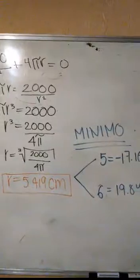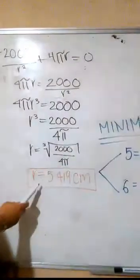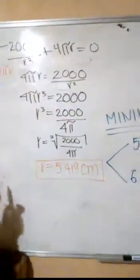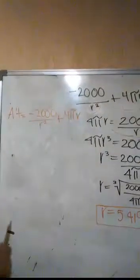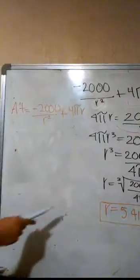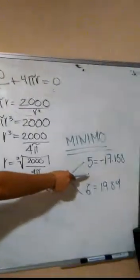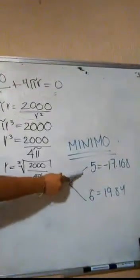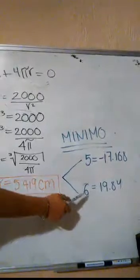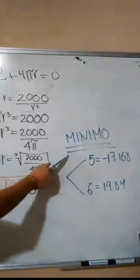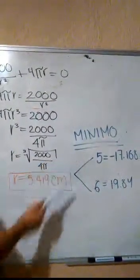Para saber si es un máximo o un mínimo sumaremos 1 y restaremos 1, y lo vamos a sustituir en nuestra derivada. Entonces tenemos que con 5 es igual a menos 17.168 y con 6 nos da 19.84. Entonces como es de menos a más tenemos un mínimo.